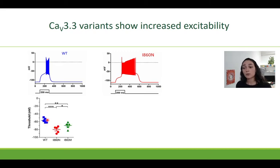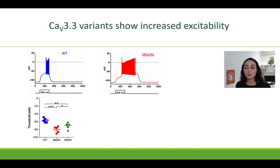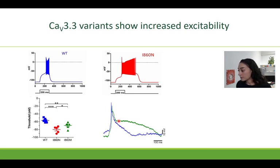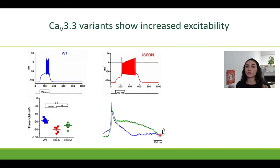Additionally, we also expressed our wild type and mutants in chromaffin cells, which are native excitable cells. We saw again a lowering of the firing threshold in the mutants compared to the wild type, and additionally we also saw a delayed decay of the calcium spikes, which would result again in a prolonged calcium influx.